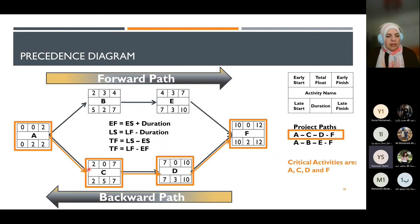Next, we perform CPM calculations using the forward pass and backward pass. This allows us to identify different paths through the network. The critical path consists of the list of critical activities, and we can also identify non-critical paths.